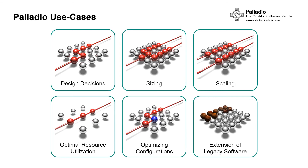Besides assessing design decisions, Palladio also supports other use cases, for example planning the sizing of a system, scaling a system, using resources in an optimal way, or optimizing the configuration of the system. Furthermore, we can also plan the extension of legacy software using Palladio by building models of the quality-relevant parts of legacy systems and combining them with newly designed components.